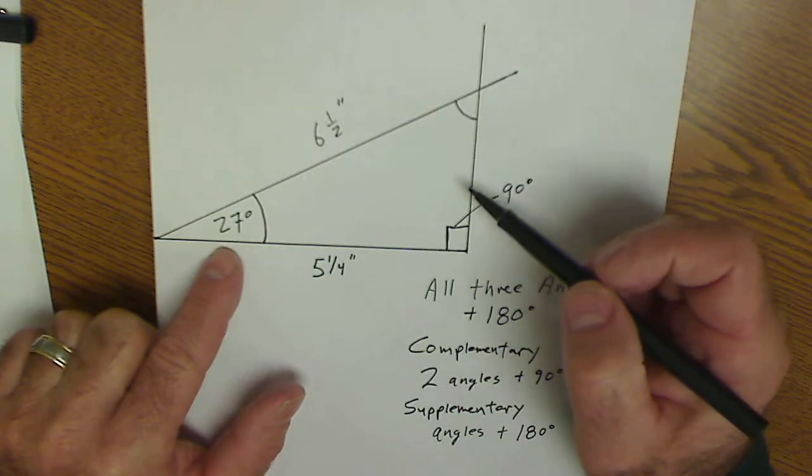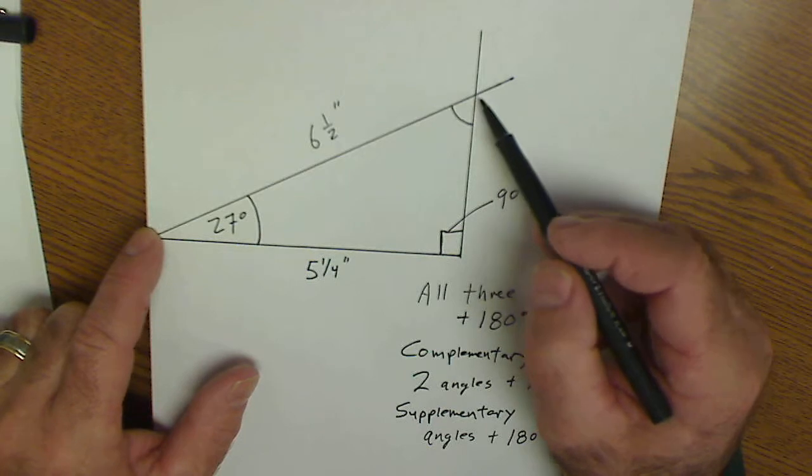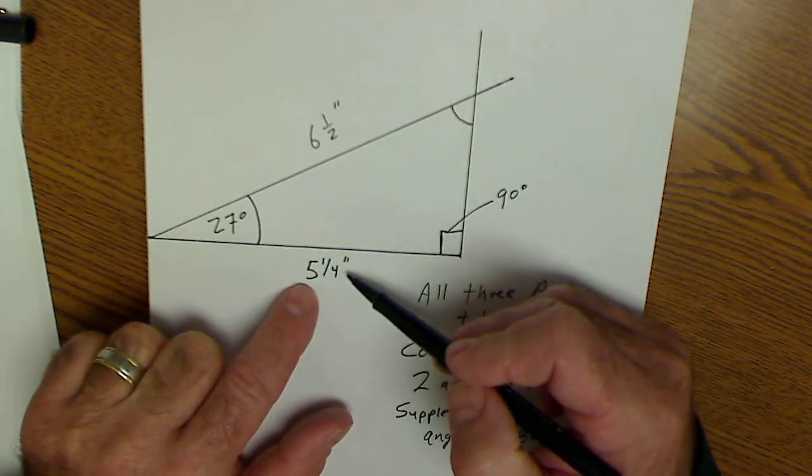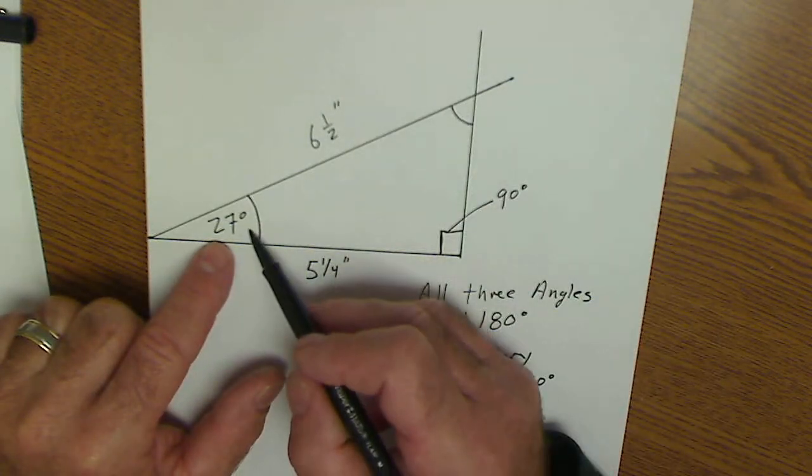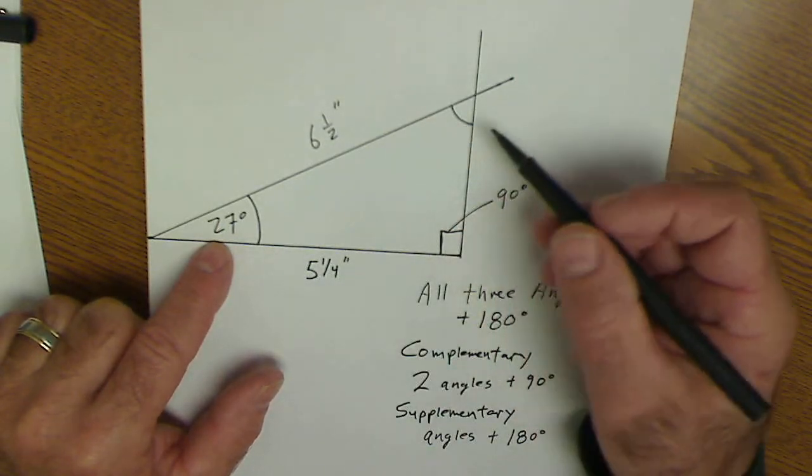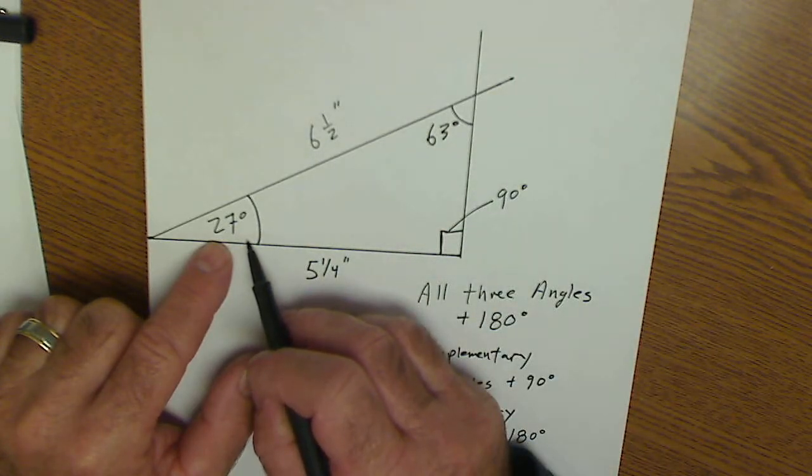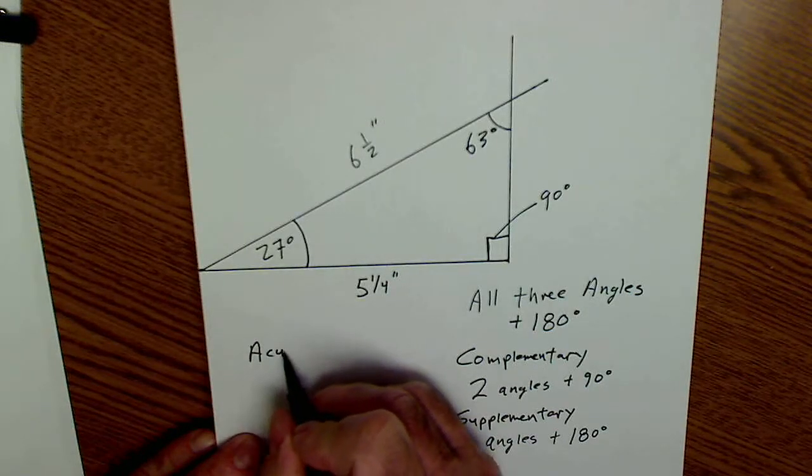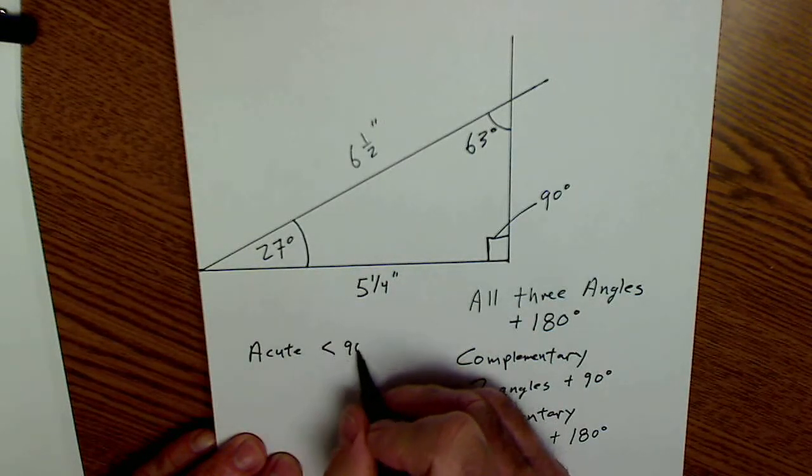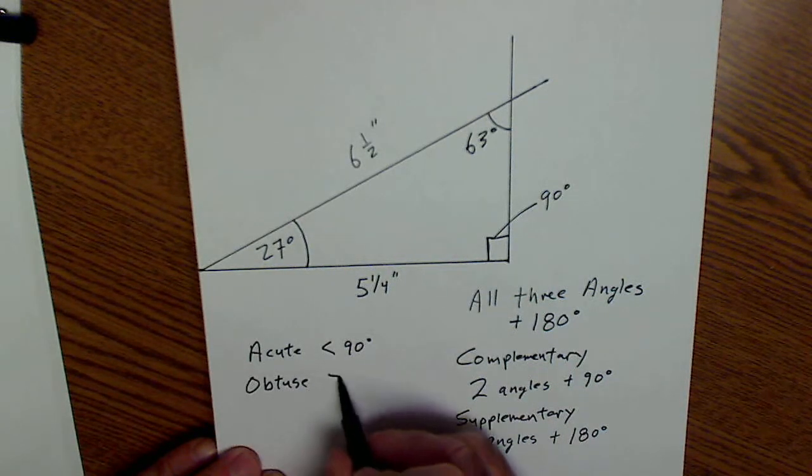And as I'm just looking at this picture, I can see that this 6 1/2 looks like 6 1/2 compared to that 5 1/4. This angle right here does look a lot bigger than this angle right here, 27 degrees. So in fact, this angle should be 63 degrees because it is a complement of this acute angle of 27 degrees. So acute means less than 90 degrees, and obtuse means greater than 90 degrees.